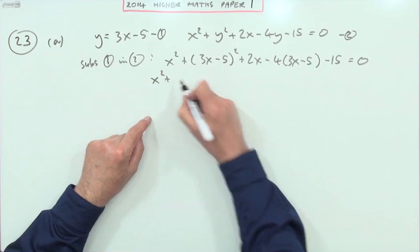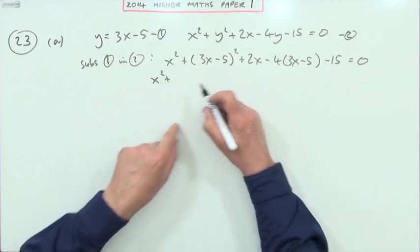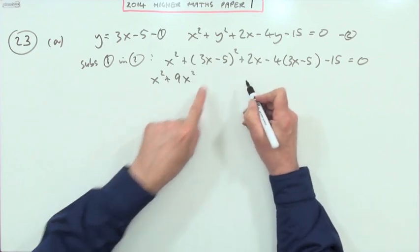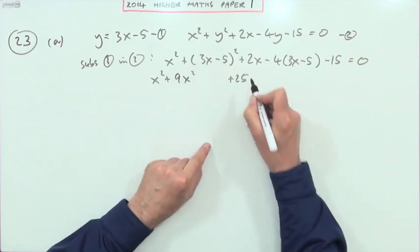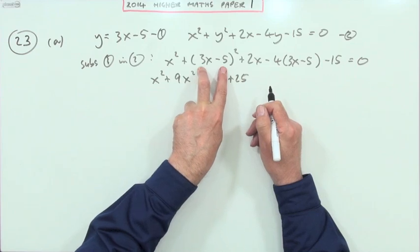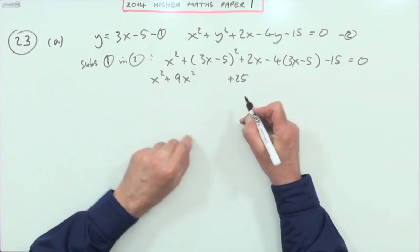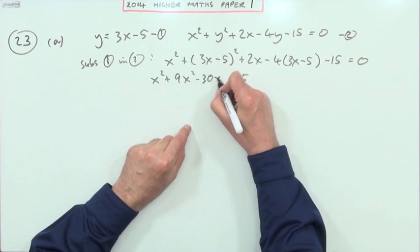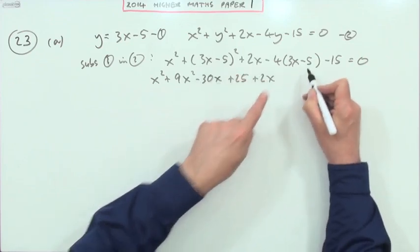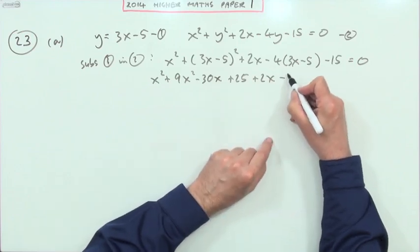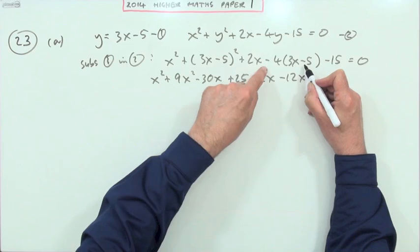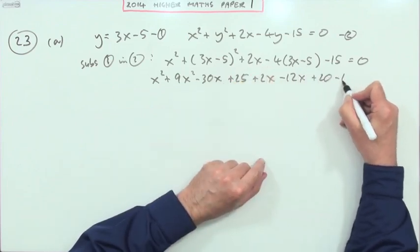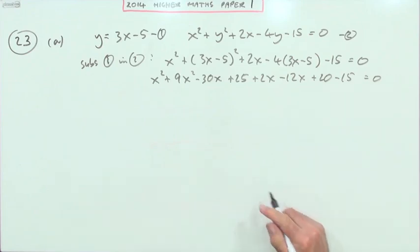Now it's all x's, just multiply it out to see exactly what we've got. Square of a bracket: square the first, 9x squared, square the last, 25, twice the product—the product is minus 15, double that minus 30, plus 2x, there's another lot minus 4, so that's minus 12x, but plus 20 minus 15 equals zero.